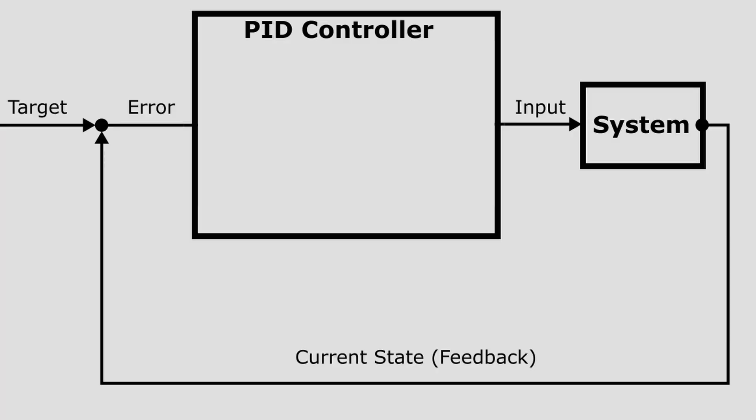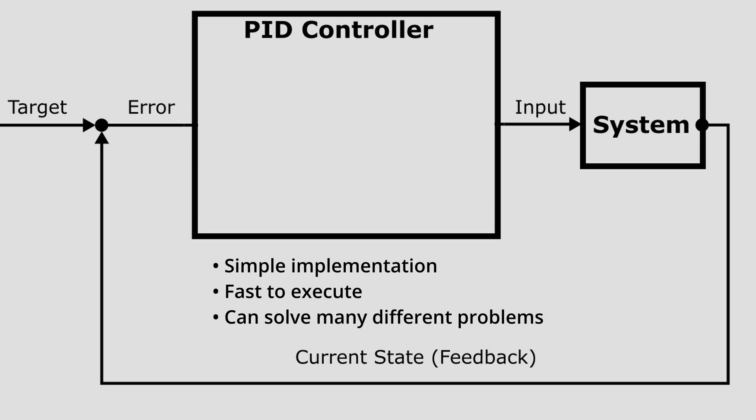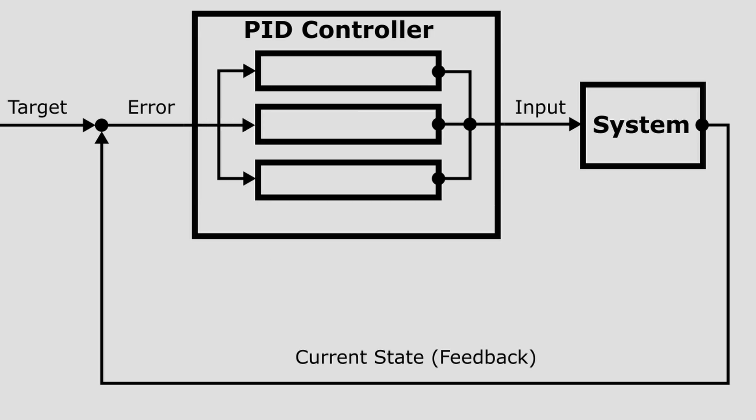PID controllers are one way to implement a control loop. They are used in many situations because they are simple, fast, and flexible. PID is an acronym that stands for Proportional, Integral, and Derivative. These are the three terms used to calculate the controller's output. The three terms are calculated from the error value using simple logic, and are added together to create the input signal. Each term handles a different problem that a system may encounter.